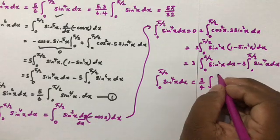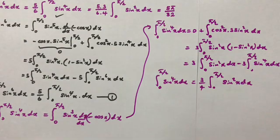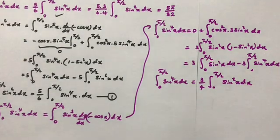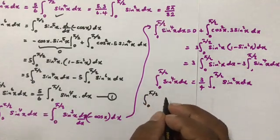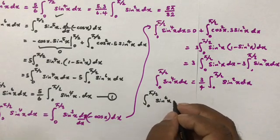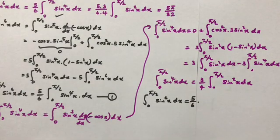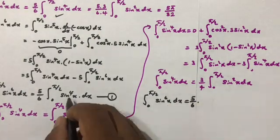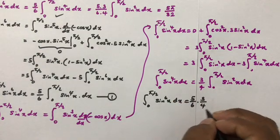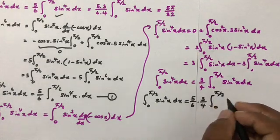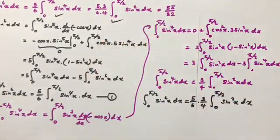So the integral from 0 to π/2 of sin⁴(x) dx equals (3/4) times the integral from 0 to π/2 of sin²(x) dx. Substituting back into equation (1), the integral from 0 to π/2 of sin⁶(x) dx equals (5/6) · (3/4) times the integral from 0 to π/2 of sin²(x) dx.